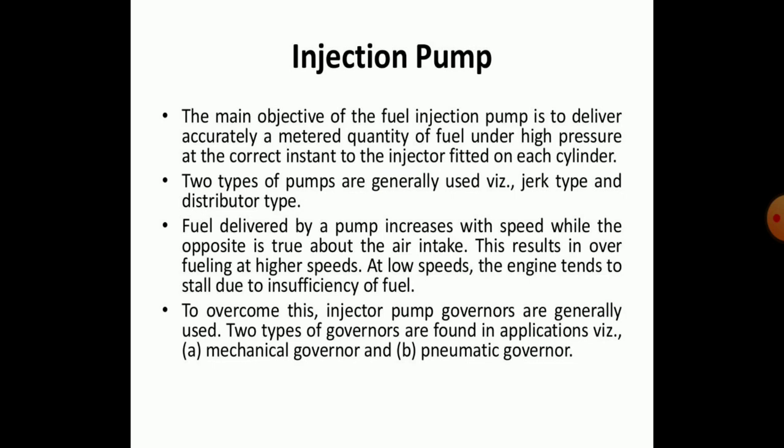The main objective of the fuel injection pump is to deliver an accurate, metered quantity of fuel under high pressure at the correct instant to the injector fitted to each cylinder. There are two types of pumps generally used: the jerk type and the distributor type. Fuel delivered by the pump increases with speed, while the opposite is true about intake, resulting in over-fueling at higher speeds. At low speed, the engine tends to stall due to insufficient fuel. To overcome this, injection pump governors are generally used.